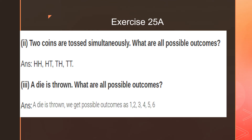First problem: two coins are tossed simultaneously. What are all the possible outcomes? Head and head, head and tail, tail and head, and tail and tail. So there are four possible outcomes.